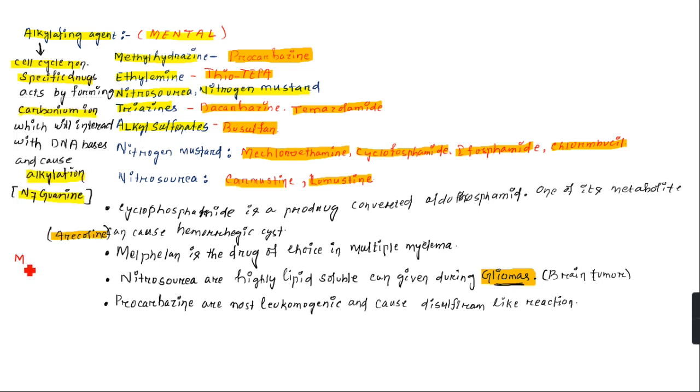An important treatment for hemorrhagic cystitis is mesna, given intravenously. Next, melphalan is the drug of choice in multiple myeloma. Nitrosourea class drugs are highly lipid-soluble, so they are given for glioma treatment. Procarbazine is the most leukemogenic alkylating agent and has disulfiram-like reaction with alcohol.